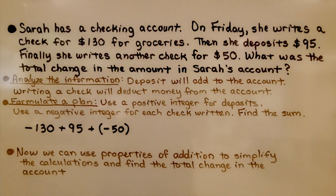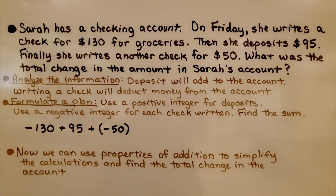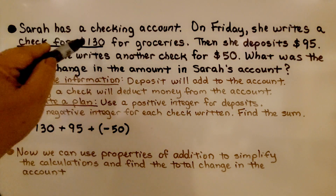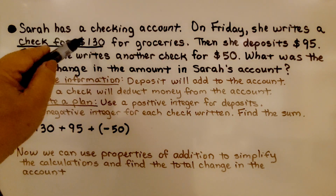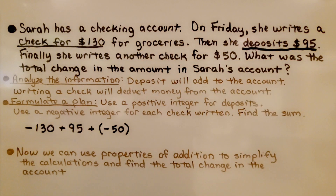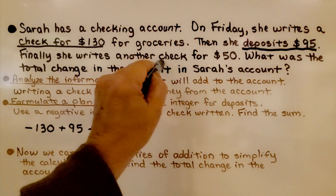Sarah has a checking account. On Friday, she writes a check for $130 for groceries, then she deposits $95, and finally she writes another check for $50. What was the total change in the amount in Sarah's account? We analyze the information: she wrote a check for $130, deposited $95, and wrote another check for $50.